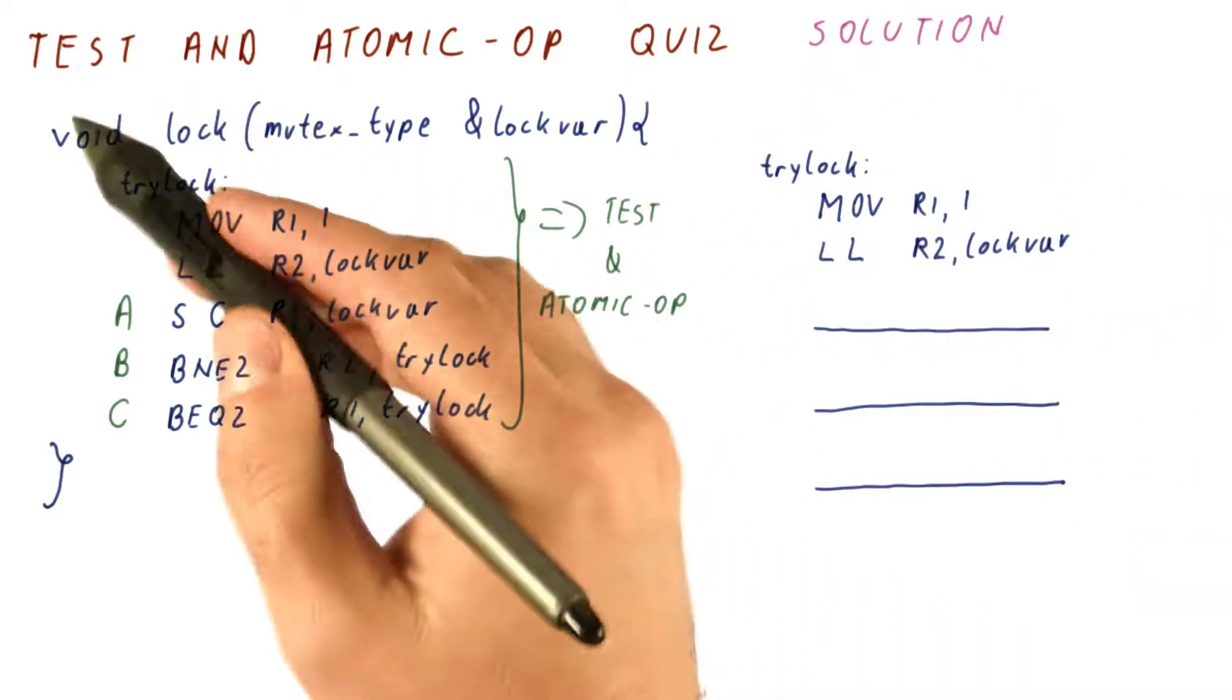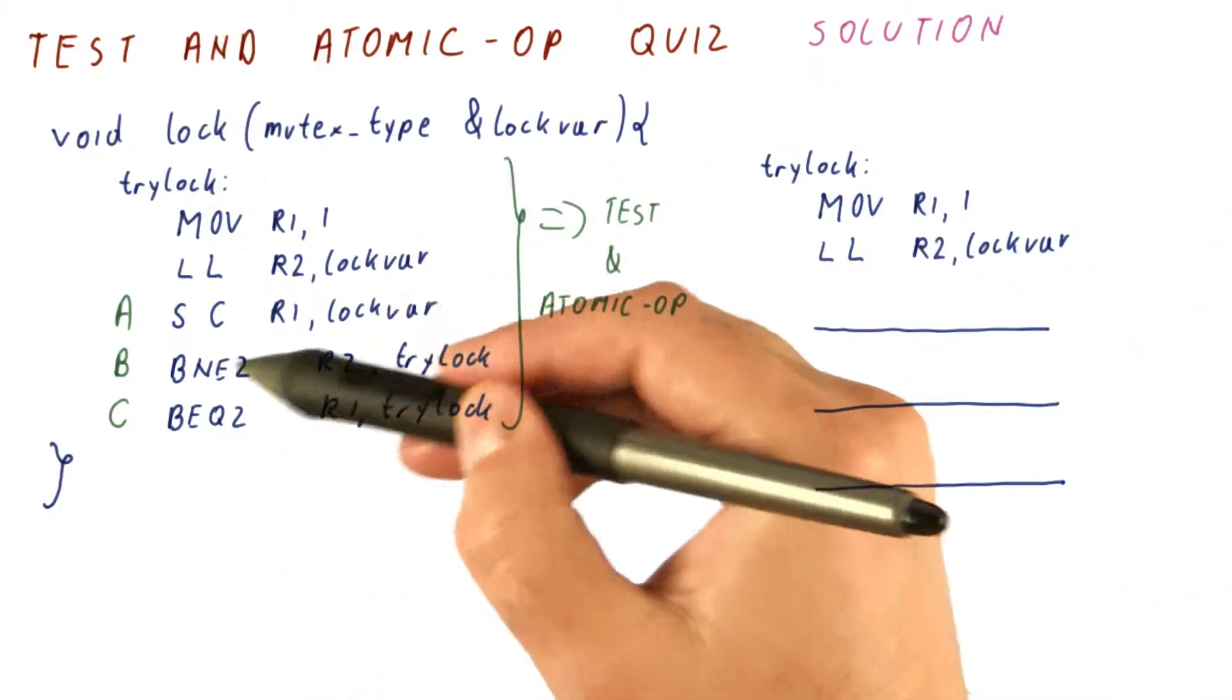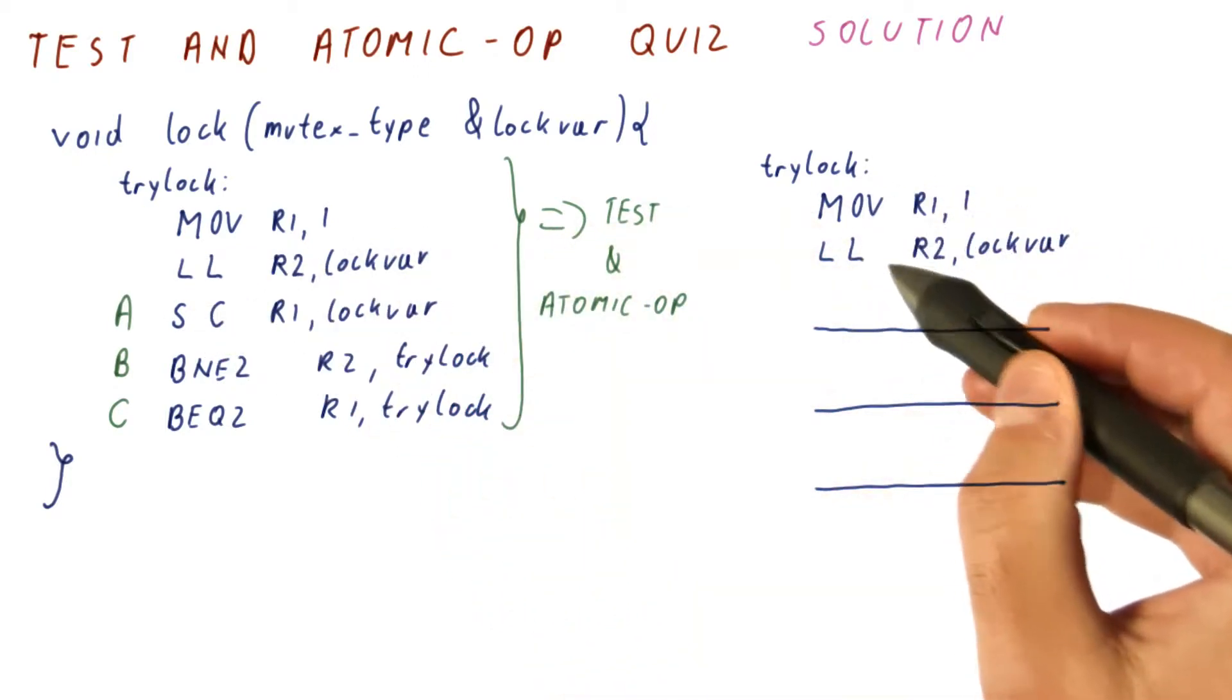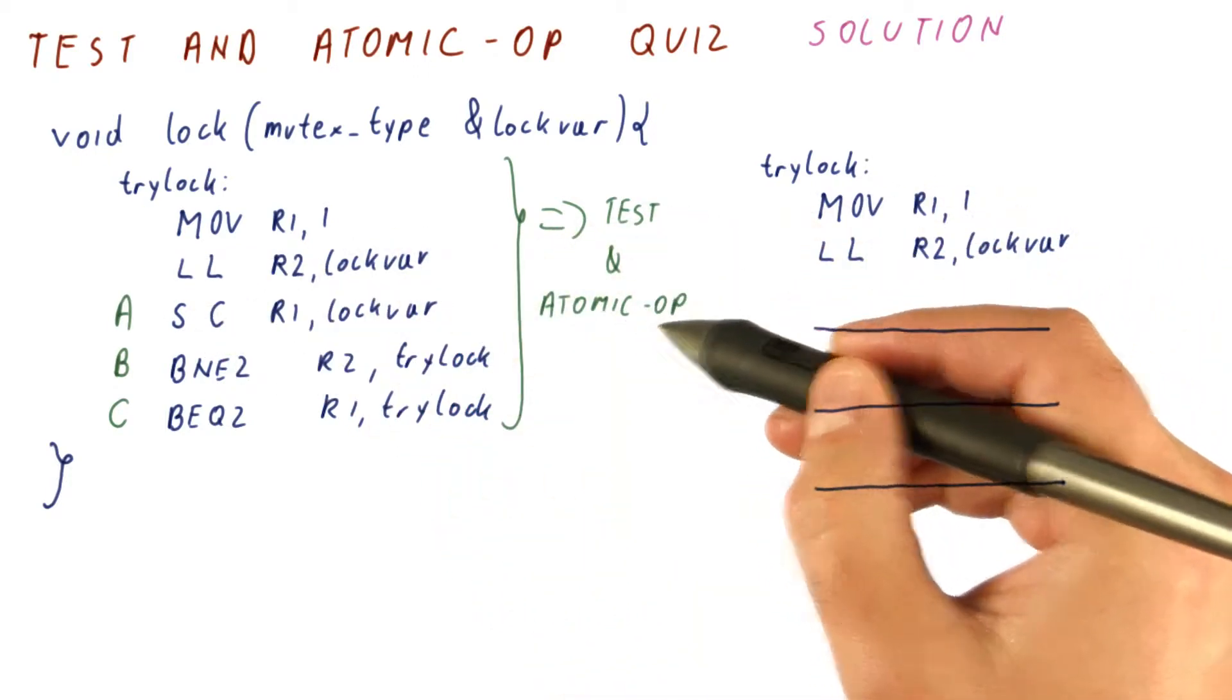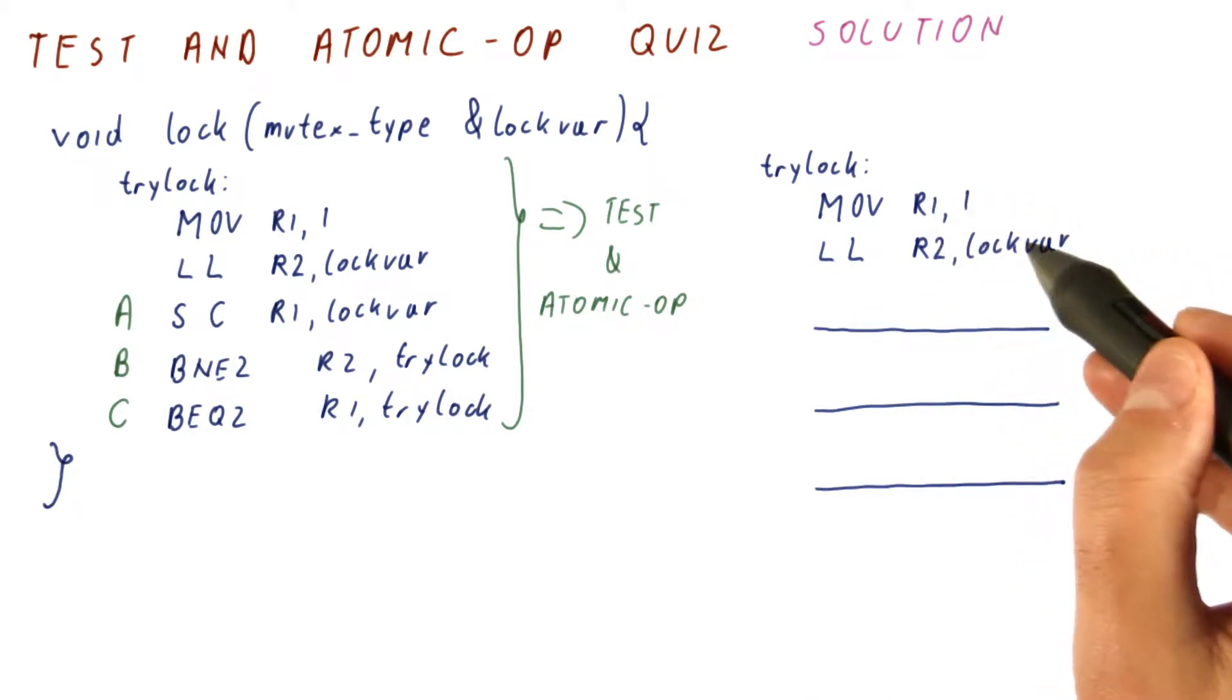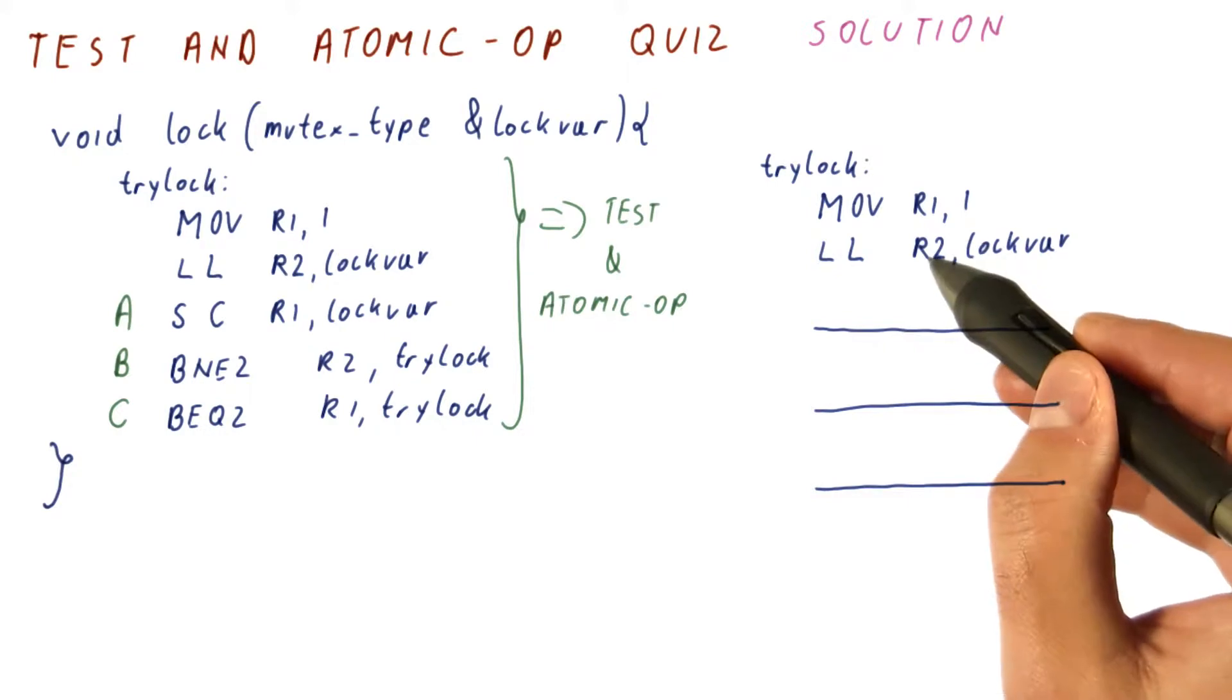Let's look at the solution for our test and atomic op quiz using load link store conditional instructions. We said that the first two instructions of the new test and atomic op approach are the same: put one in R1 and then load from lockvar to R2.